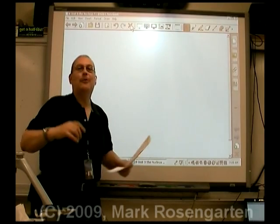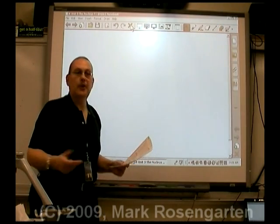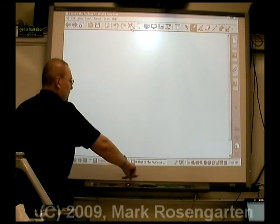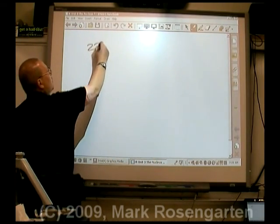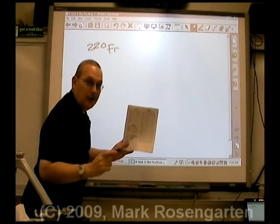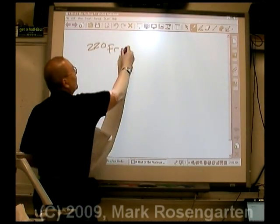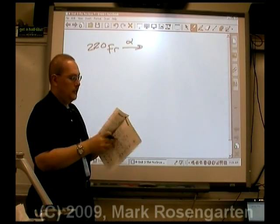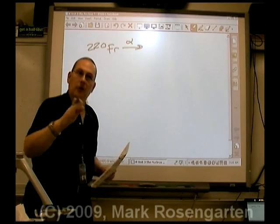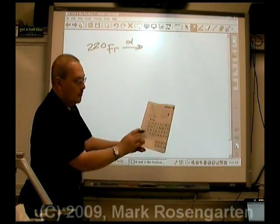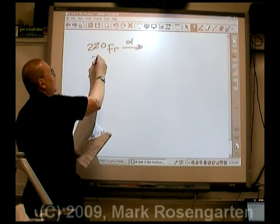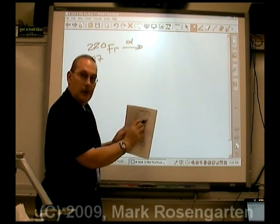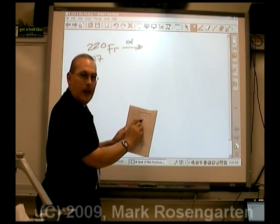And finally, what about alpha decay? Let's just pick one here that undergoes alpha. Francium-220 undergoes alpha decay. So let's do that. 220 Fr, according to this, undergoes alpha decay. Now, what's its atomic number? Francium's atomic number is 87. An alpha particle, what's that again? Reference table O says it's 4 over 2 He.